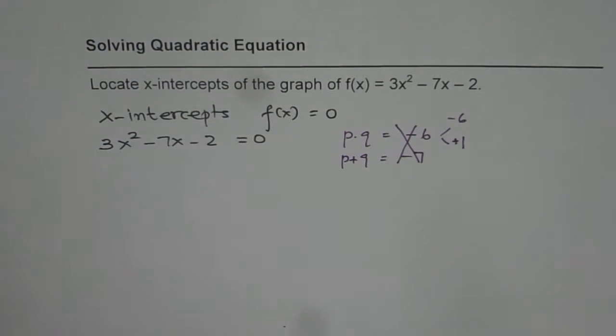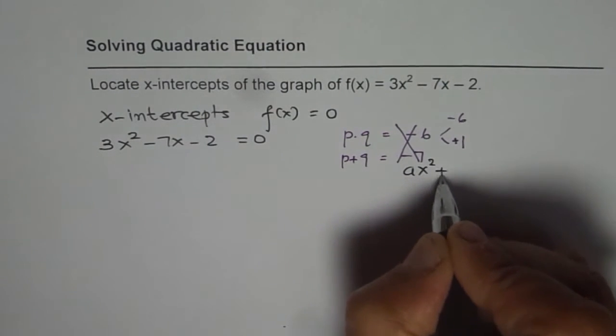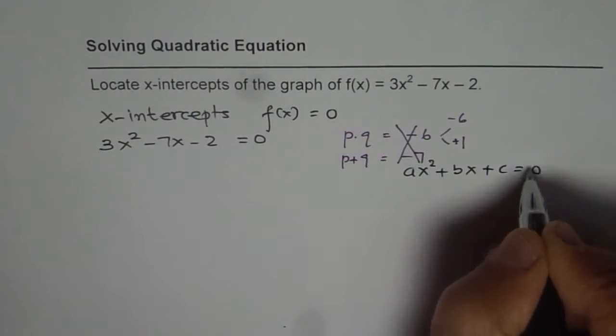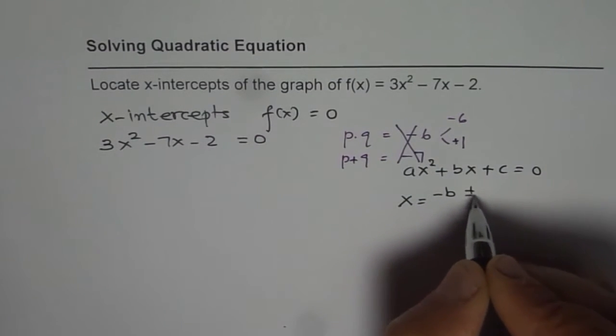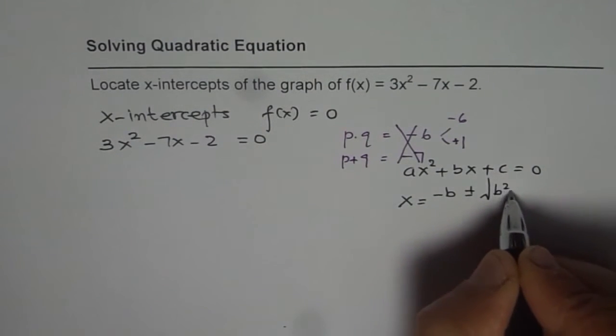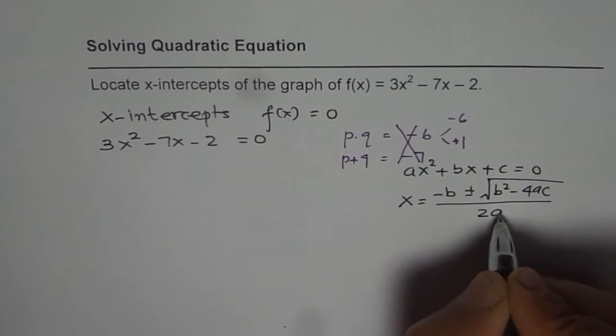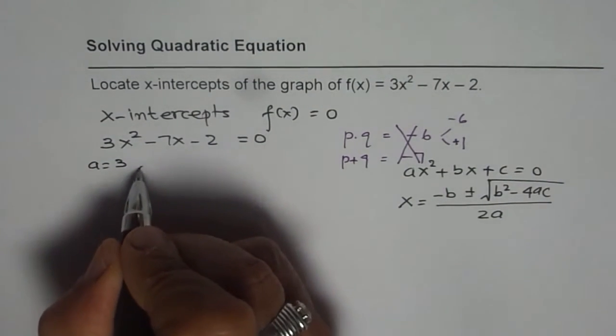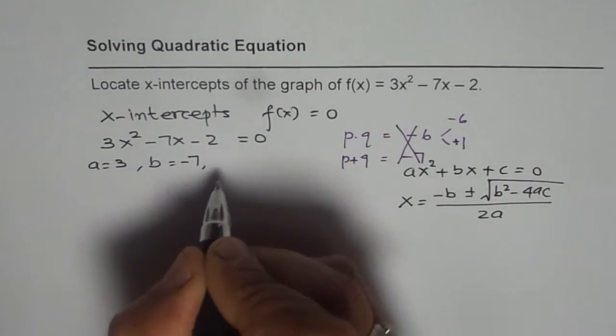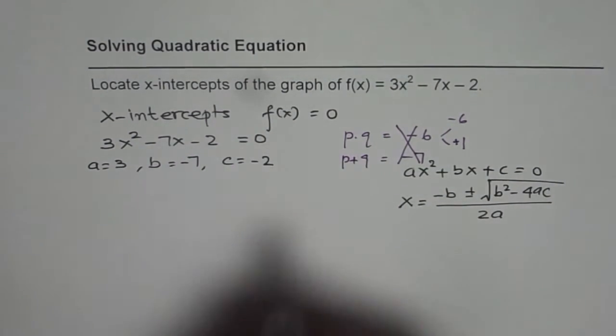Therefore, we are left with the option of using quadratic formula. In a quadratic formula, the general equation is ax² + bx + c = 0, and x equals minus b plus or minus square root of b² - 4ac, divided by 2a. In this equation, we have a = 3, b = -7, and c = -2. So let's put these values and calculate.